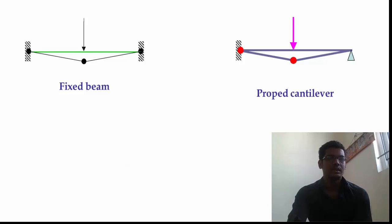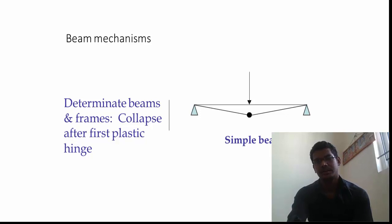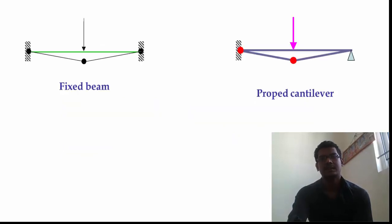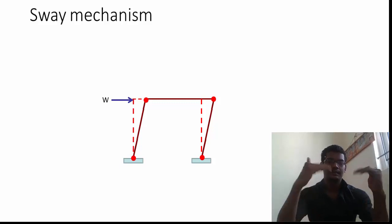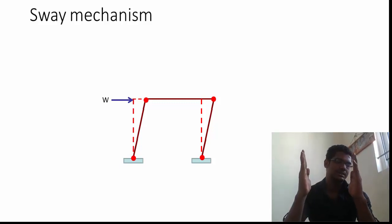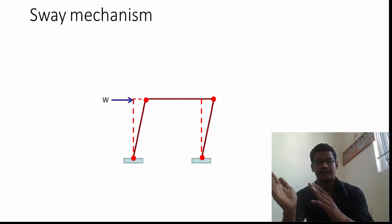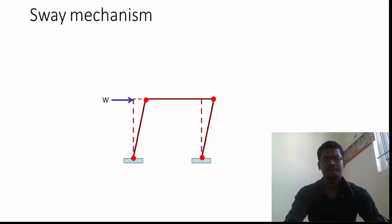In a propped cantilever beam, the degree of indeterminacy is 1, so there are 2 hinges. To summarize: in a simply supported beam there is 1 plastic hinge, in a fixed beam there are 3, and in a propped cantilever beam there are 2. Portal frames fail in two independent mechanisms — the portal frame may have a hinge at the centre of the top beam, or it may sway left or right. When a load is applied onto the beam-column joint, it sways and thus 4 plastic hinges are formed.